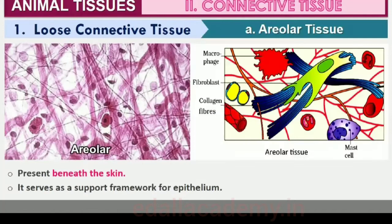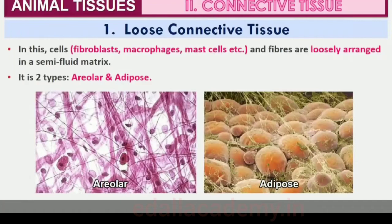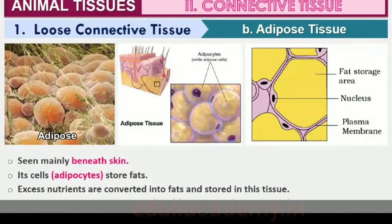It contains fibroblasts, cells that produce and secrete fibers, macrophages and mast cells. Adipose tissue is another type of loose connective tissue located mainly beneath the skin. The cells of this tissue are specialized to store fats. The excess of nutrients which are not used immediately are converted into fats and are stored in this tissue.